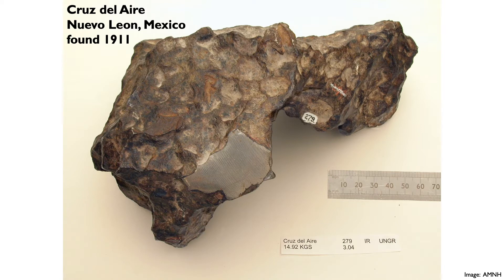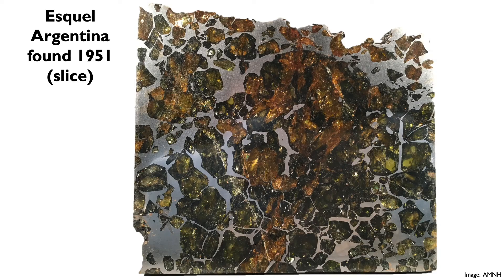Here we have another example of an iron meteorite. Though there isn't a Widmanstätten pattern visible, you can see what the outside looks like — it's darker because meteorites form a fusion crust as they come through Earth's atmosphere due to extreme temperatures. Here we have what is perhaps my favorite type of meteorite, called a pallasite. Pallasites are mixtures of iron-nickel metal from a planet's core with silicate minerals from a planet's mantle — specifically the mineral olivine, which is also the most common mineral in Earth's mantle.